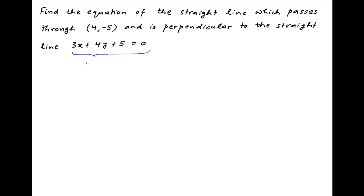The equation of the straight line given in the problem statement can be written as 4y is equal to minus 3x minus 5. Divide both sides by 4, we get y is equal to minus 3 upon 4 times x minus 5 upon 4.